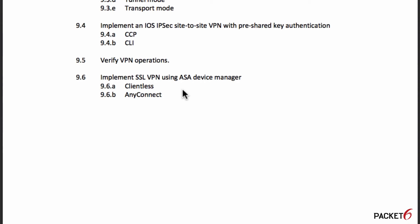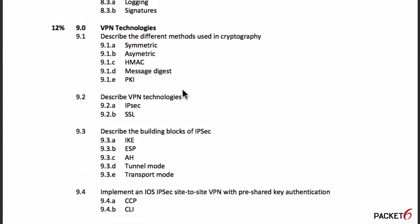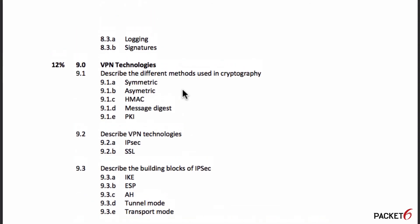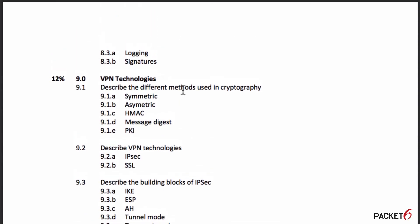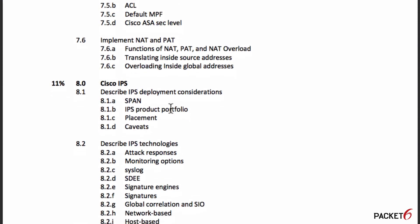That is a quick rundown of the objectives for the CCNA Security exam. I recommend you download it, read it thoroughly, and gauge yourself every time you finish a chapter — for example, after reading about Cisco IPS, can you describe the caveats of IPS deployment considerations? Check off each item when finished. If you have any questions, leave a comment below or email hello@packet6.com. Thank you for watching.